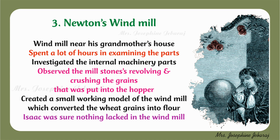He created a small working model of the windmill. Though it was not so large, it converted a handful of wheat grains put into the little hopper into snow-white flour. When Isaac was sure nothing lacked in the windmill, one of his friends said it lacked a miller. Isaac admitted to look out for one, accepting the feedback positively.